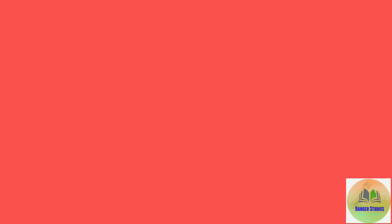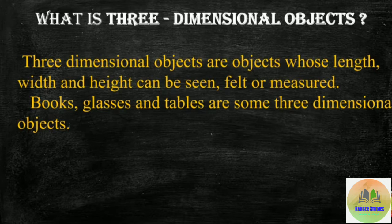First, we will recall three-dimensional objects definition. Three-dimensional objects are objects whose length, width and height can be seen.